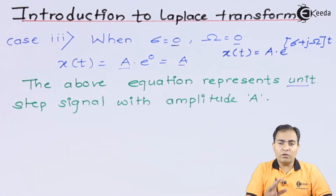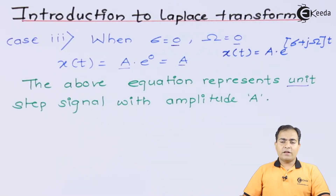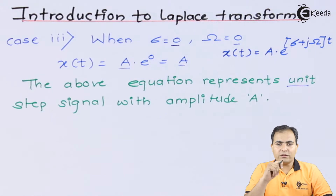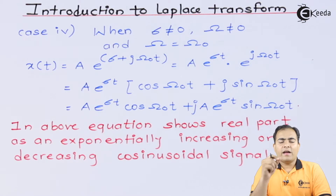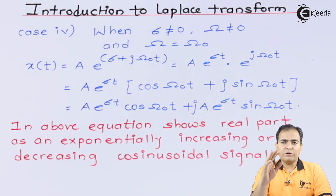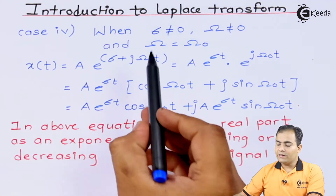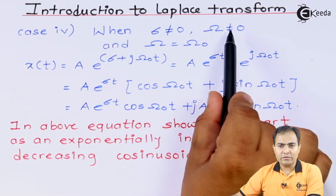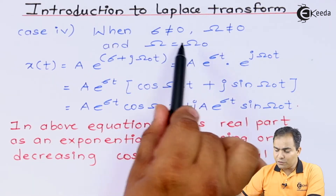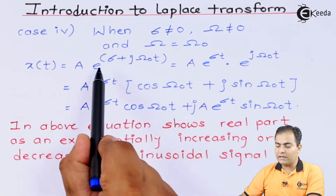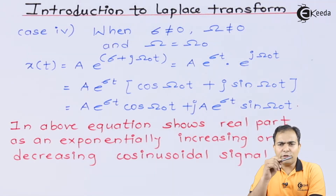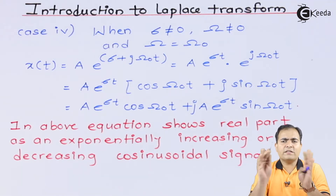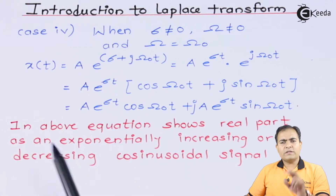Now we will move to the last and most important case. Here sigma is not equal to 0 and omega is also not equal to 0 — case number 4. We substitute some values of sigma and omega₀. The equation becomes A·e^((σ + j·ω₀)T). We separate the exponential powers using the formula e^(A+B) = e^A · e^B — the same basic formula from mathematics. So sigma·T is A and j·ω₀·T is B, giving us two separate exponential terms: one with real power and one with imaginary power.